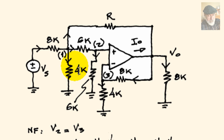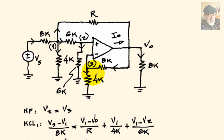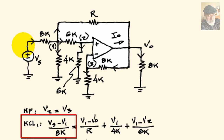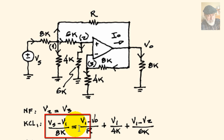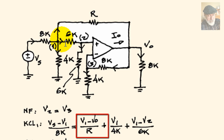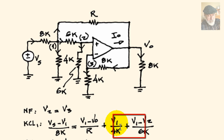Let's write KCL equations for nodes 1, 2, and 3. The input current to an ideal op-amp is 0, so the current in each input segment is 0 amps. KCL for node 1: current going in is Vs minus V1 over 8 kilohms, equal to the three currents leaving the node: V1 minus V0 over R, plus V1 over 4 kilohms, plus V1 minus V2 over 6 kilohms.